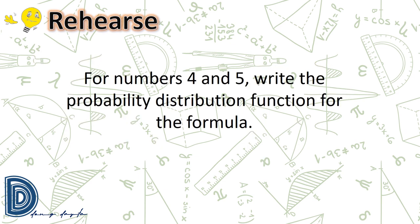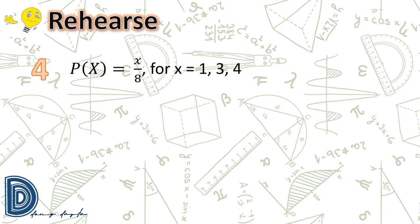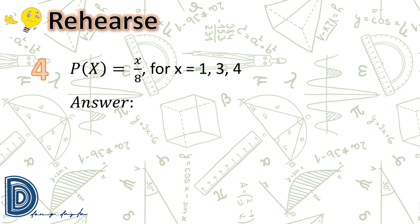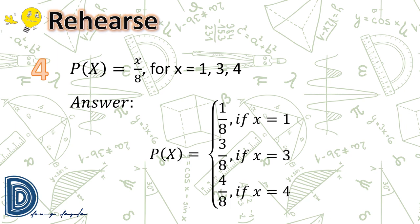For numbers 4 and 5, write the probability distribution function for the given formula. Number 4: p(x) = x/8 for x = 1, 3, 4. Substituting: p(1) = 1/8; p(3) = 3/8; p(4) = 4/8 = 1/2.